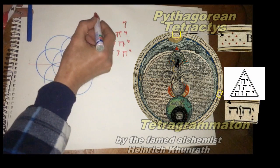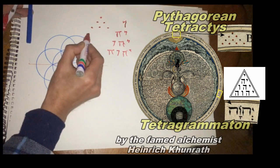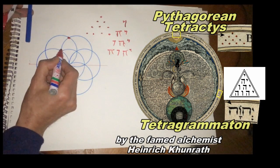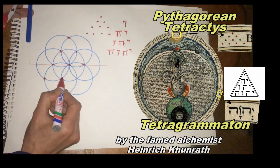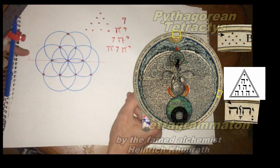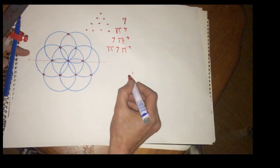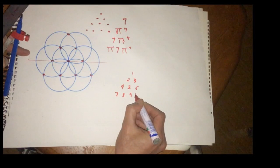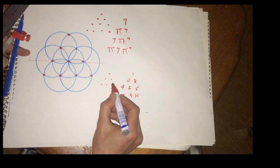We also have the Tetractys, which is this Pythagorean symbol — again one, two, three, four, the same pattern. You can also get it from the Seed of Life. The point of this is the dimensional aspects, especially four-dimensional aspects, so we'll be looking at triangular numbers: one, two, three, four, five, six, seven, eight, nine, and ten.